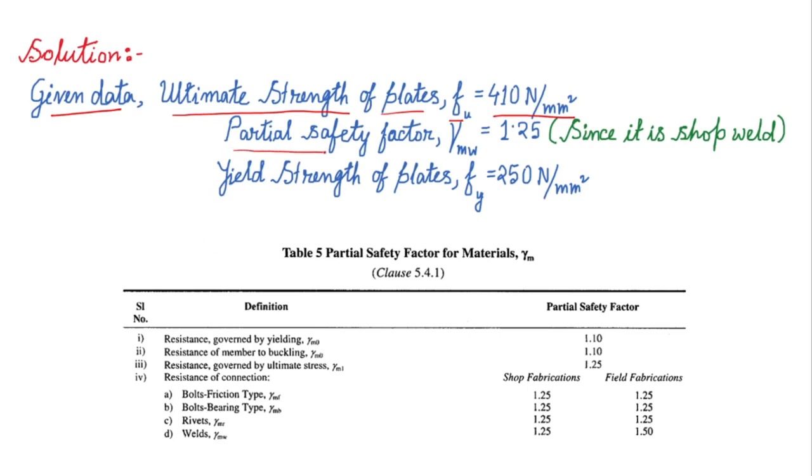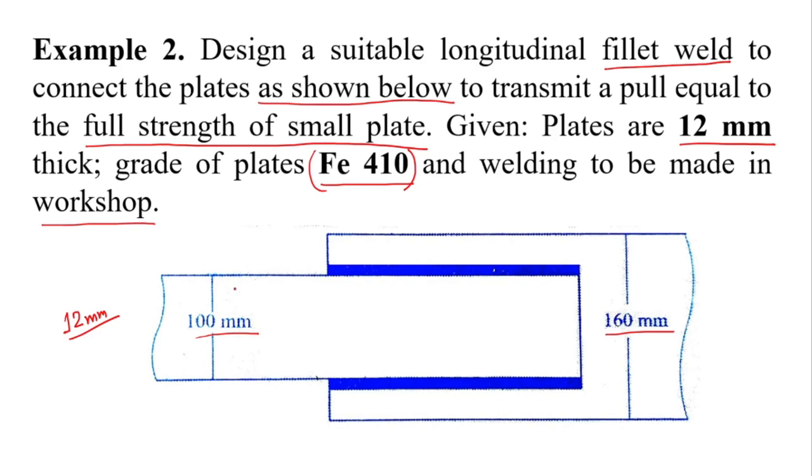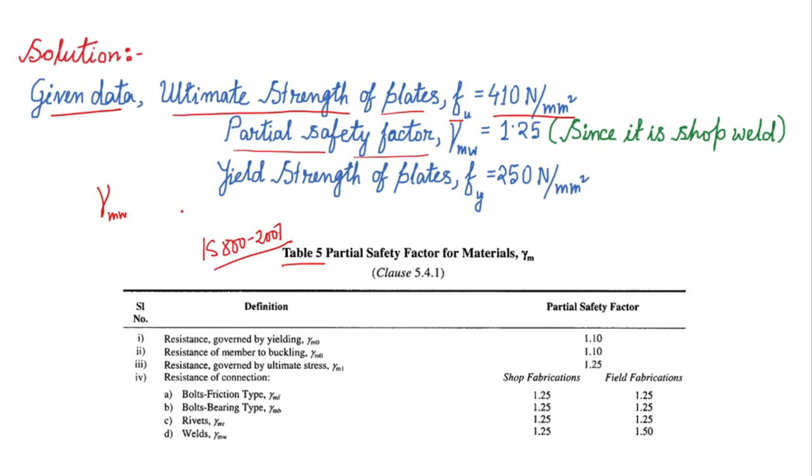Next, partial safety factor for weld which is denoted by gamma mw. It is taken from table number 5 of IS 800 2007. As the welding is made at workshop, so gamma mw for shop fabrication is 1.25.